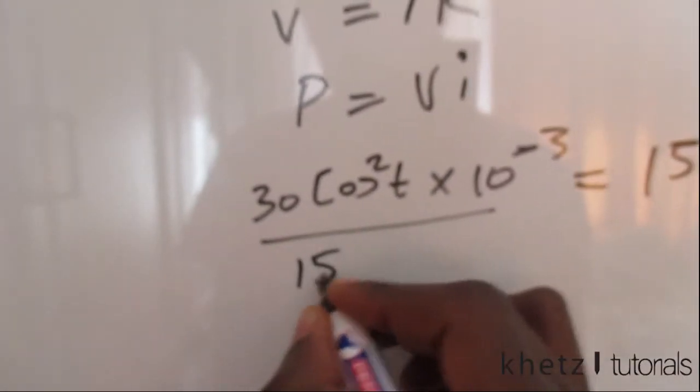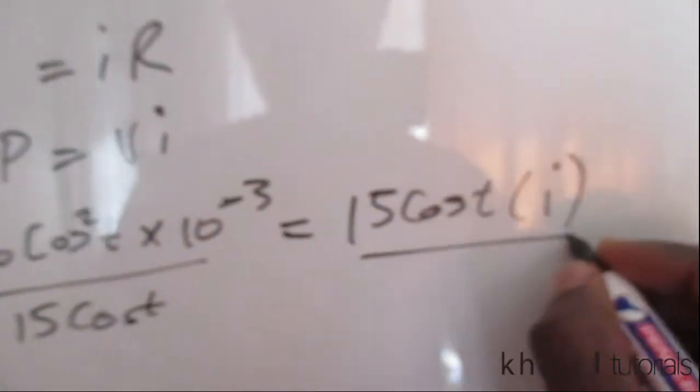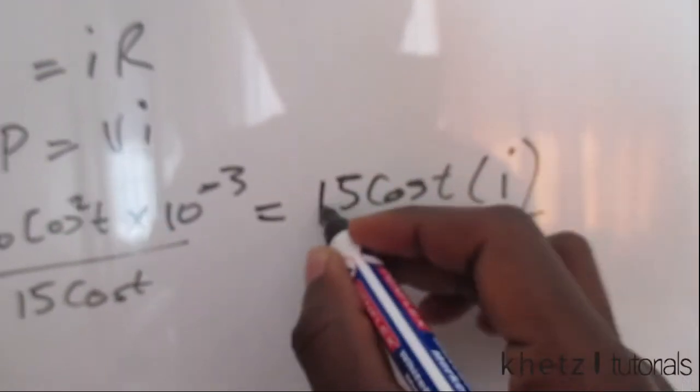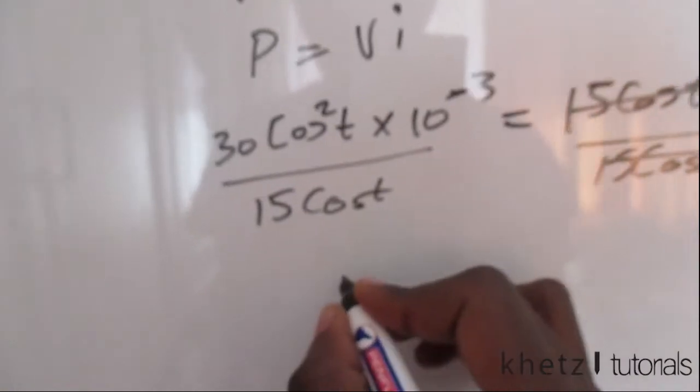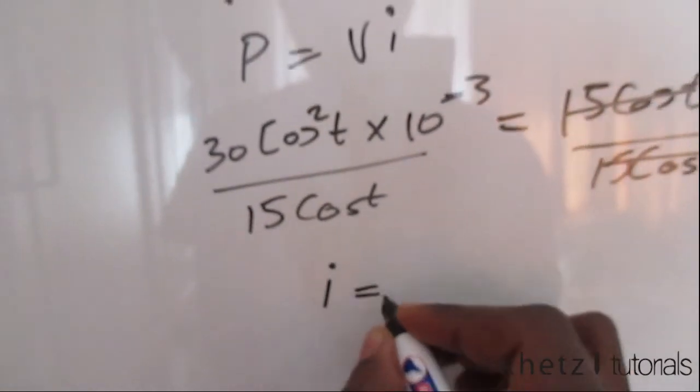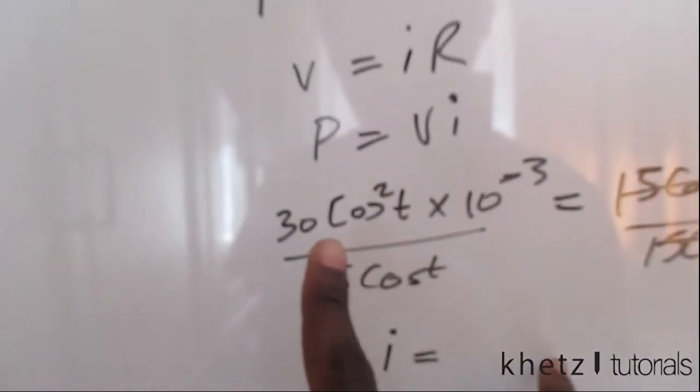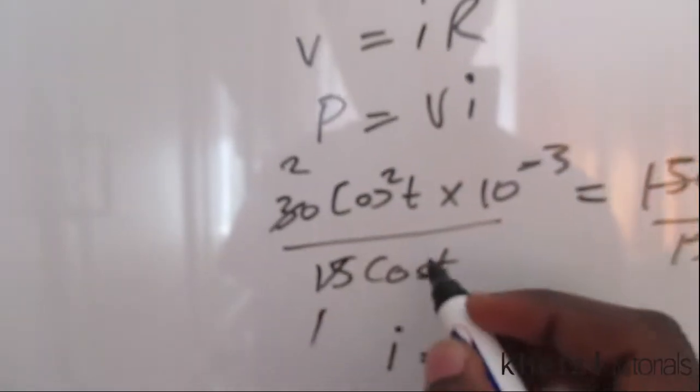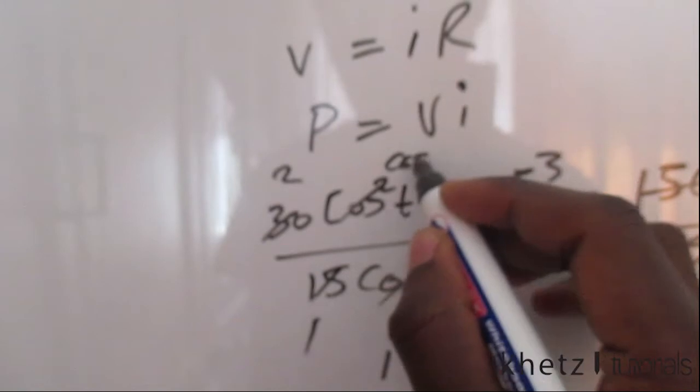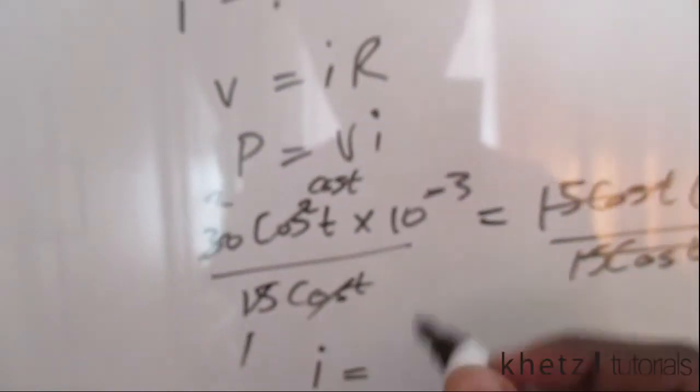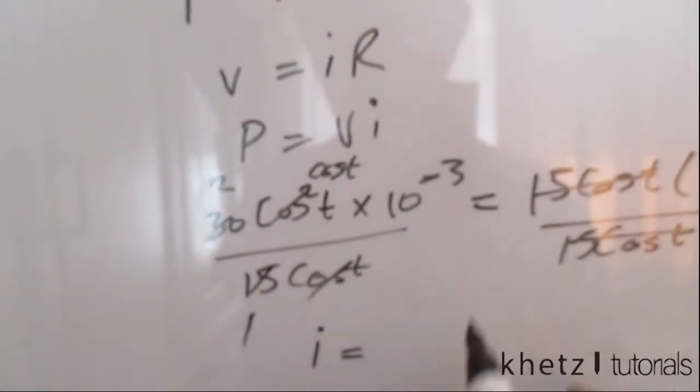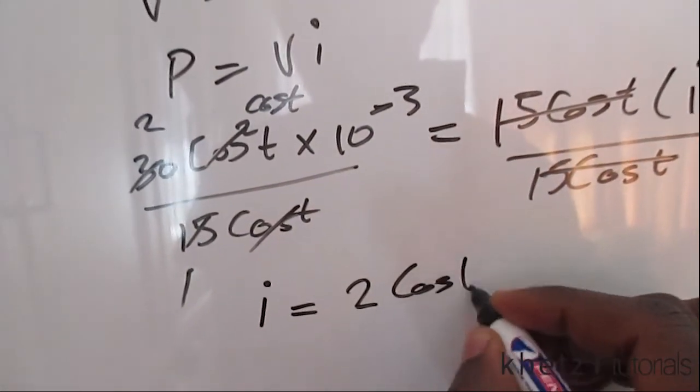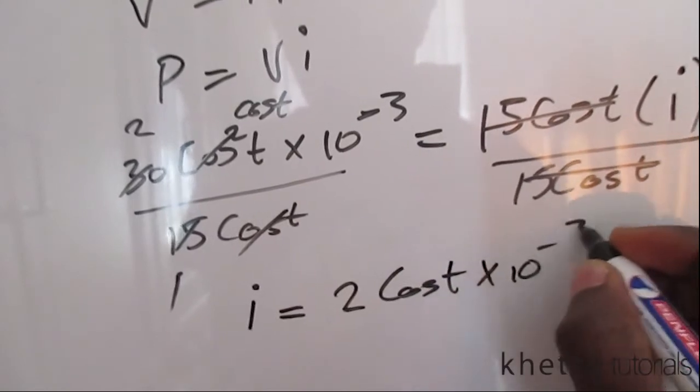So divide both sides by 15 cos t. That will cancel out so we're left with I equals, calculating this you can cancel, have 2, and the cos t stays the same, so the answer would be 2 cos t.